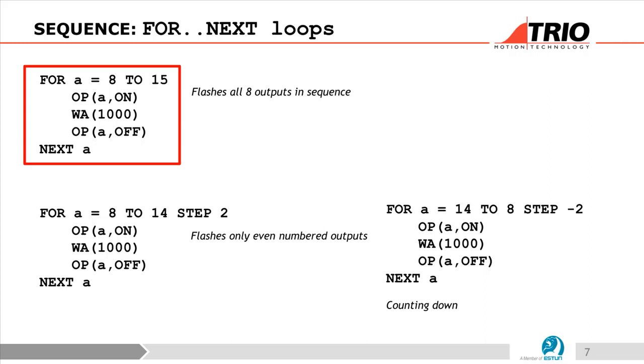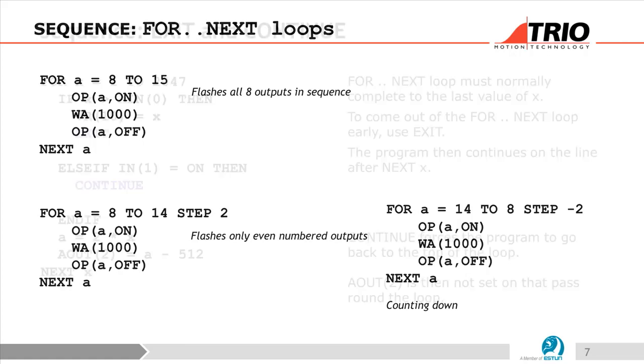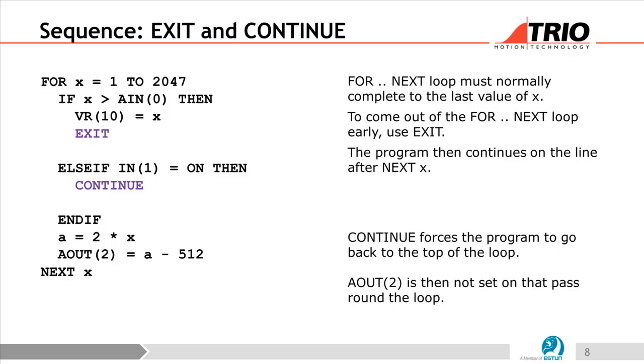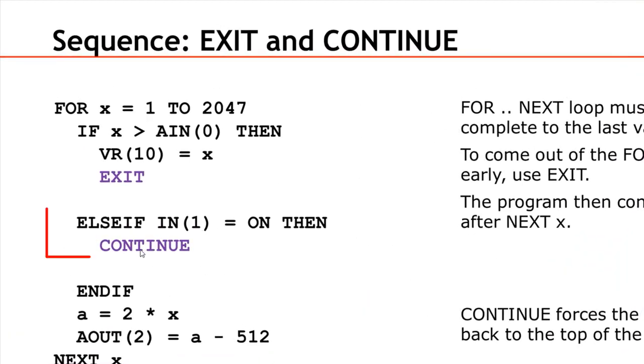This is a sequence I rarely use. To exit the FOR NEXT loop must normally complete to the last value of the axis. To come out of the FOR NEXT loop early, you can use the EXIT function. The program then continues on the line after NEXT. CONTINUE actually forces the program to go back to the top of the loop. If input 1 is on, then do a continue, and the output to 2 is then not set on that pass round of the loop.